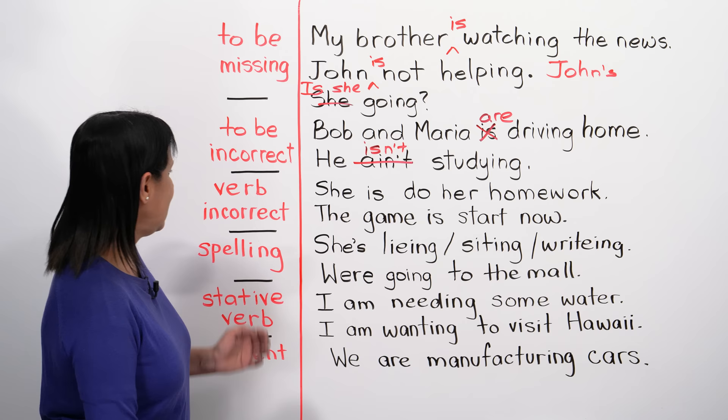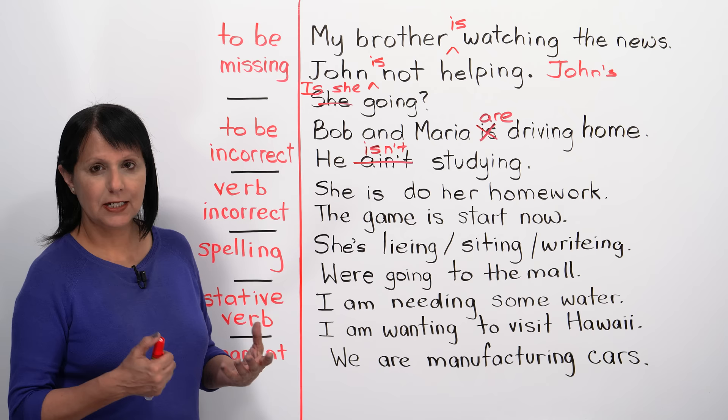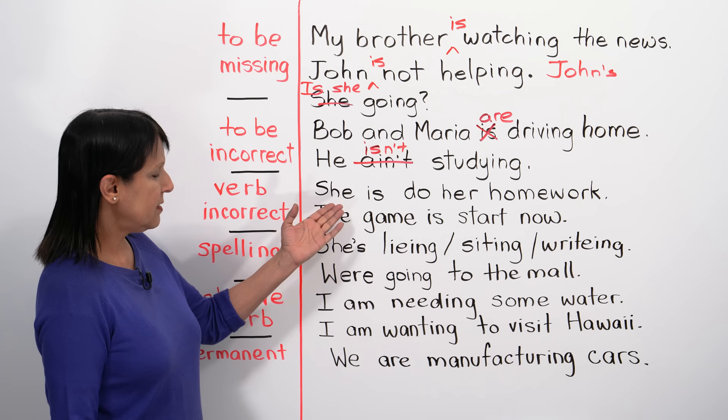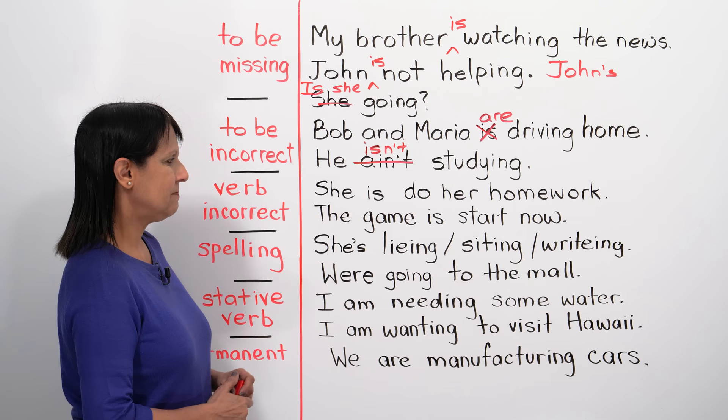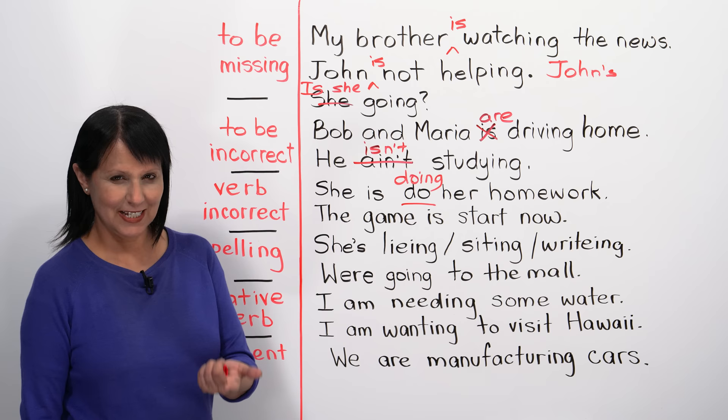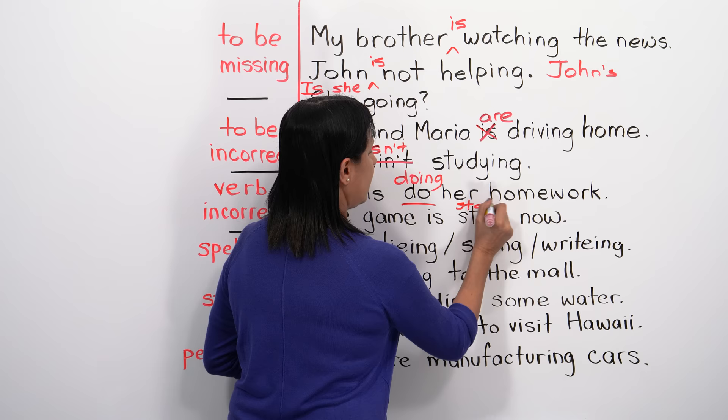Sometimes the main verb is used incorrectly. For example, 'She is due her homework' should be 'She is doing her homework.' And 'The game is start now' should be 'The game is starting now.' Once you know the rules, you can spot and fix these errors yourself.